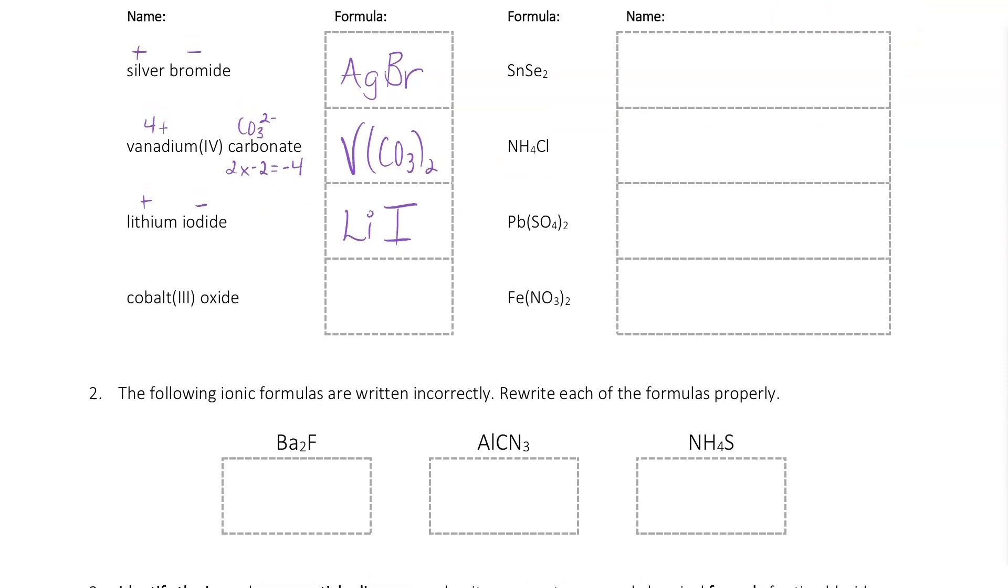We've got a Roman numeral on this next one, cobalt 3 oxide, so that means cobalt is going to be plus 3. Oxide is in group 16, it's going to have a minus 2 charge. Those are not going to be equal if I combine one of each. This is a little bit of a tricky one. When we've got 2 and 3 as our charges, we want to make them both equal to 6, which means I'm going to need 2 cobalts with a plus 3 charge and 3 oxygens with a minus 3 charge. Make sure that those formulas are always going to be neutral there.